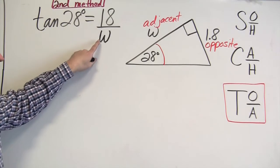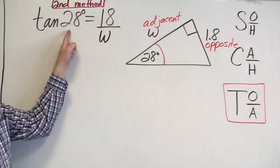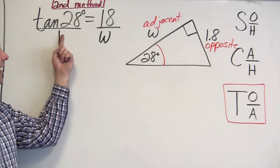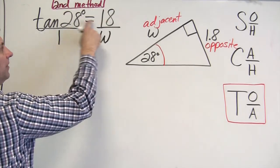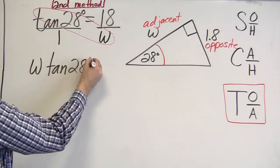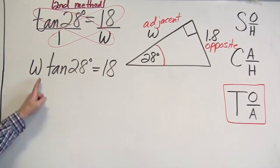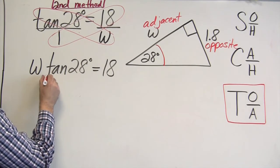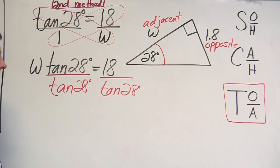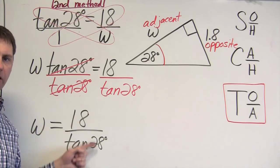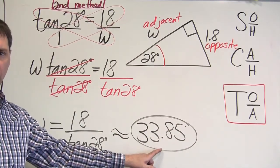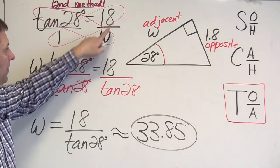Another way to solve this: think of tangent of 28° as a fraction — tangent of 28° over 1. Now you have two equal fractions, a proportion, and you can cross multiply to get your answer. That gives w × tan(28°) on one side. Divide both sides by tan(28°) to isolate w. Make sure your calculator is set to degrees, and you get the same answer as before, approximately 33.5.